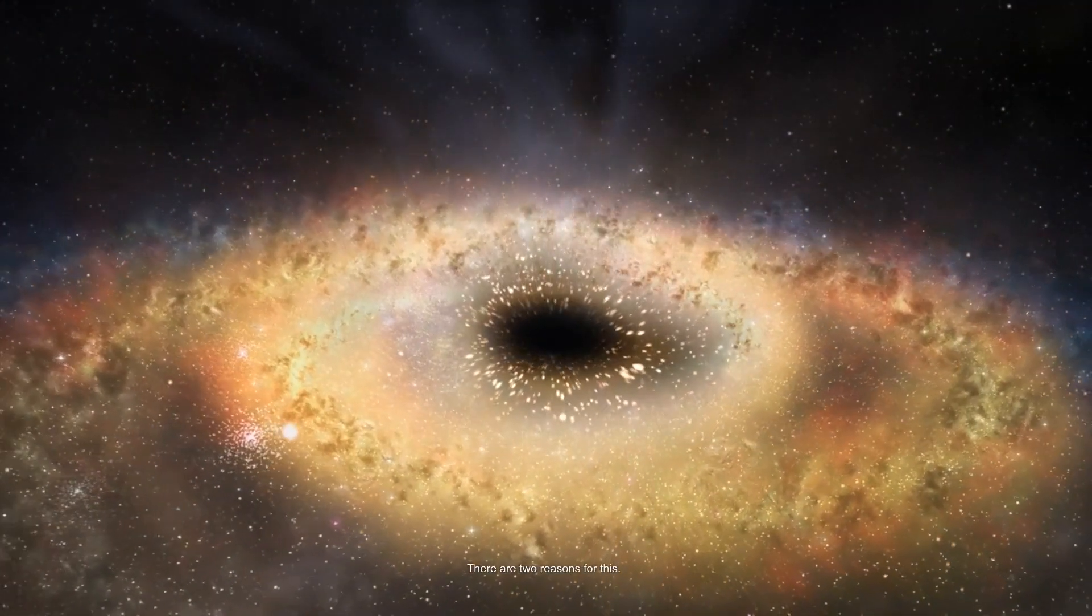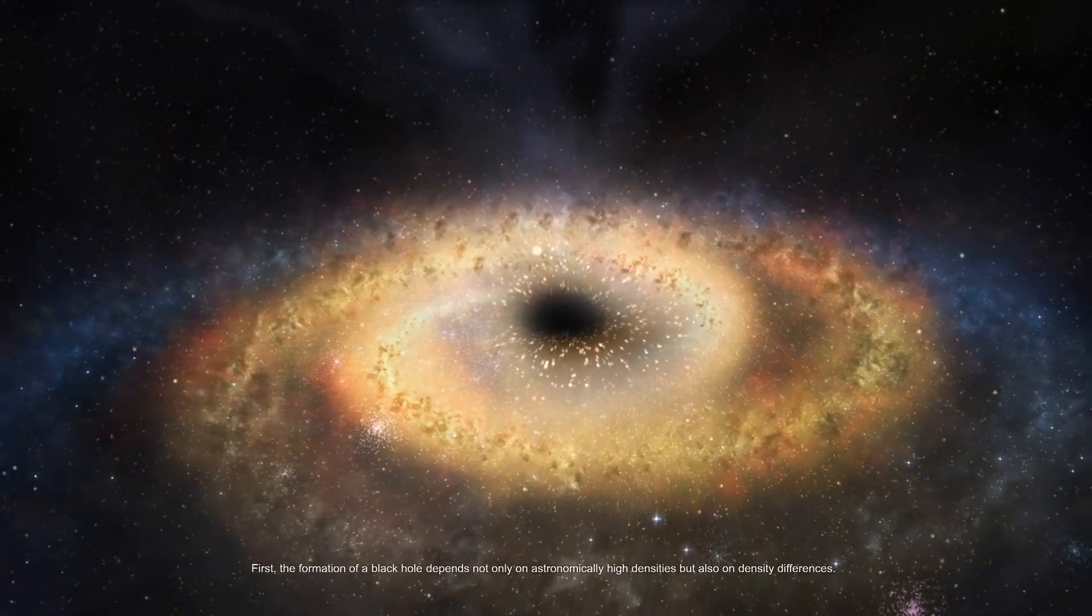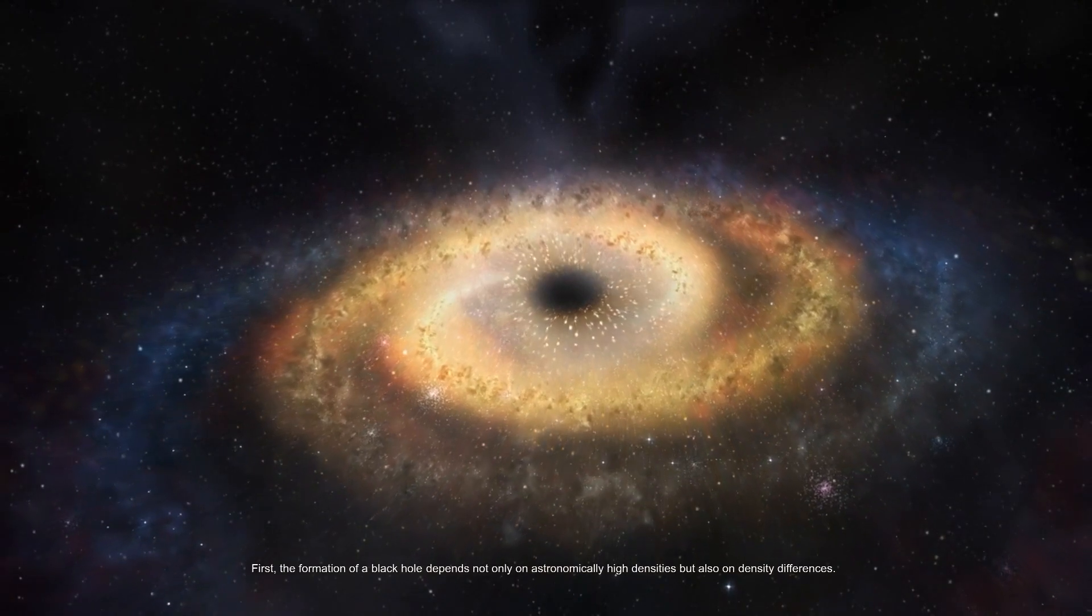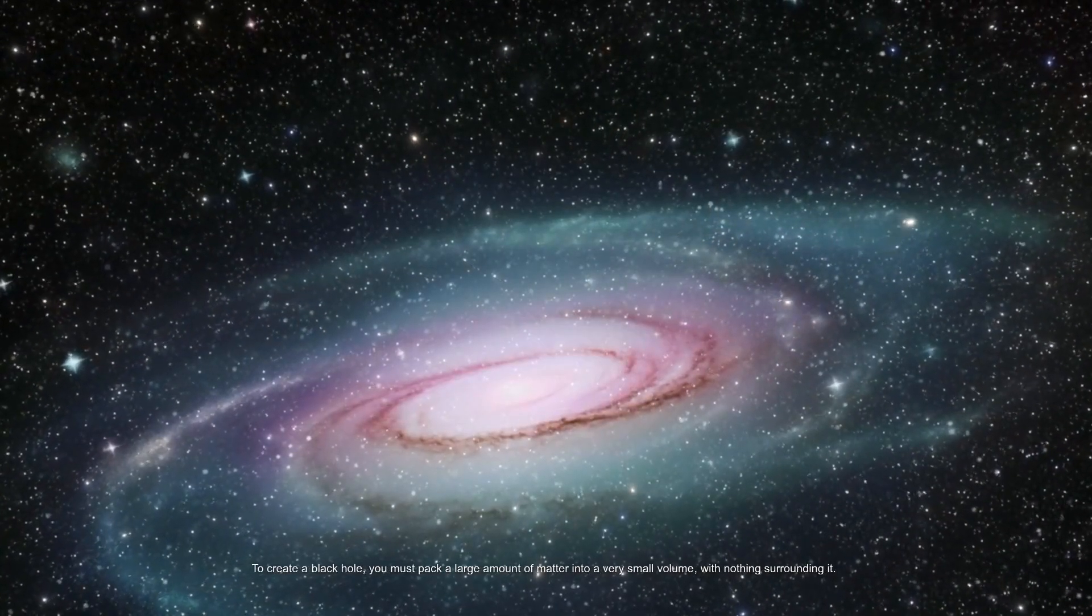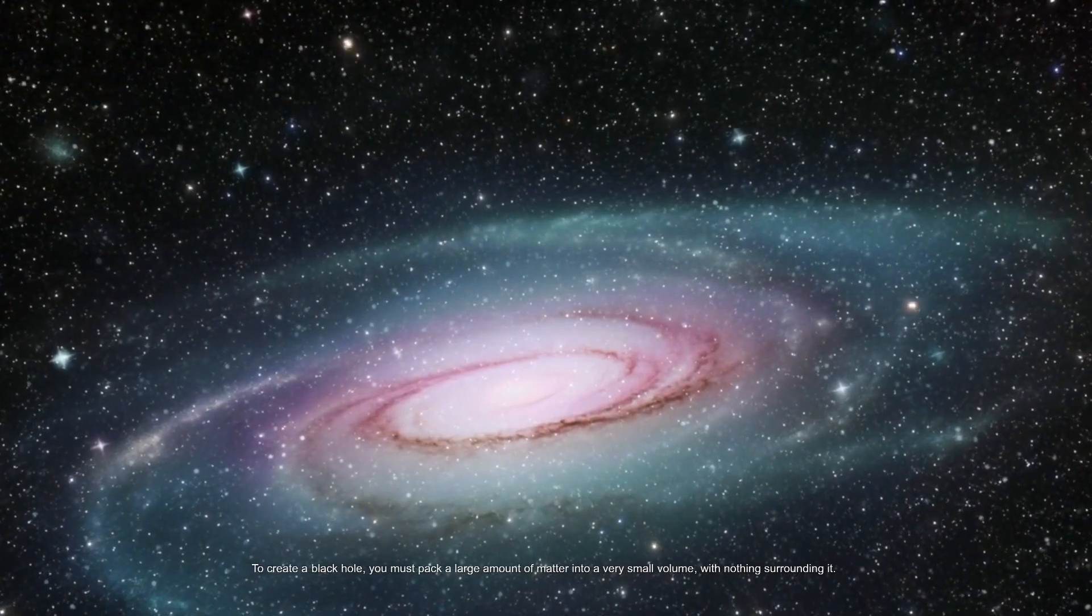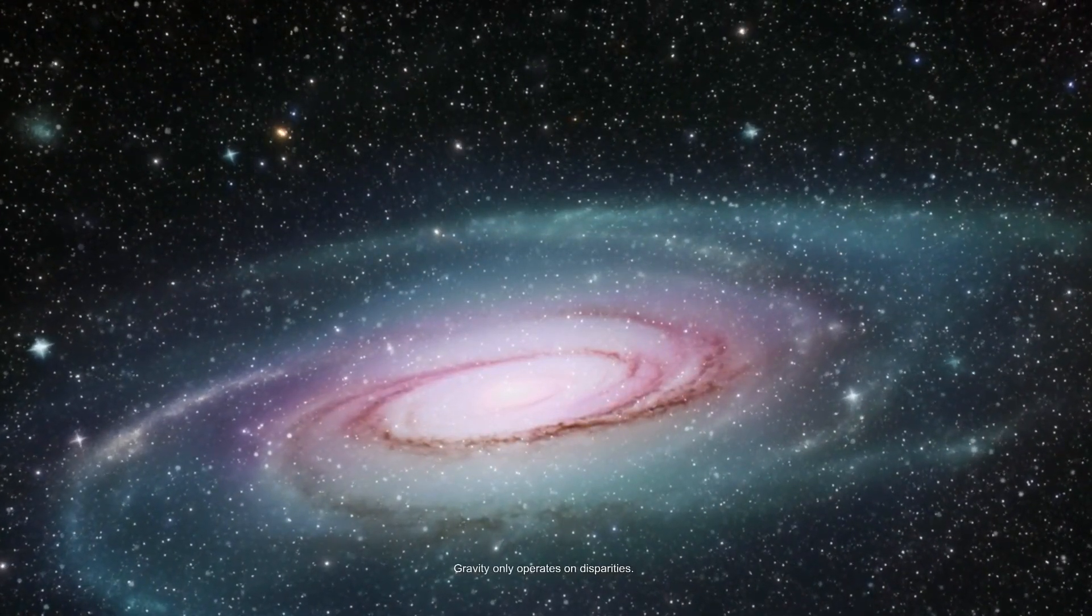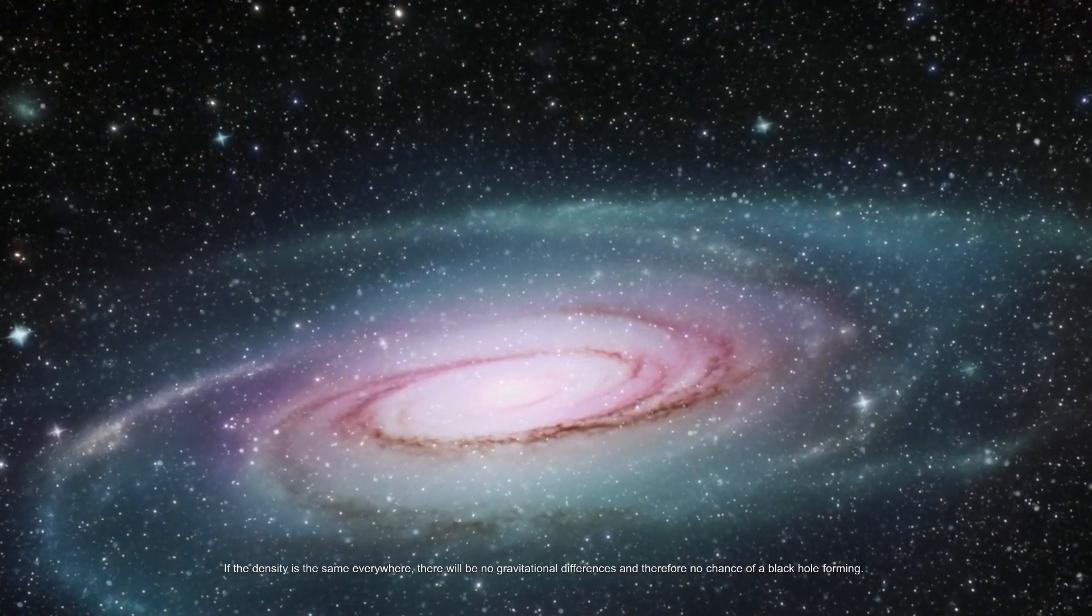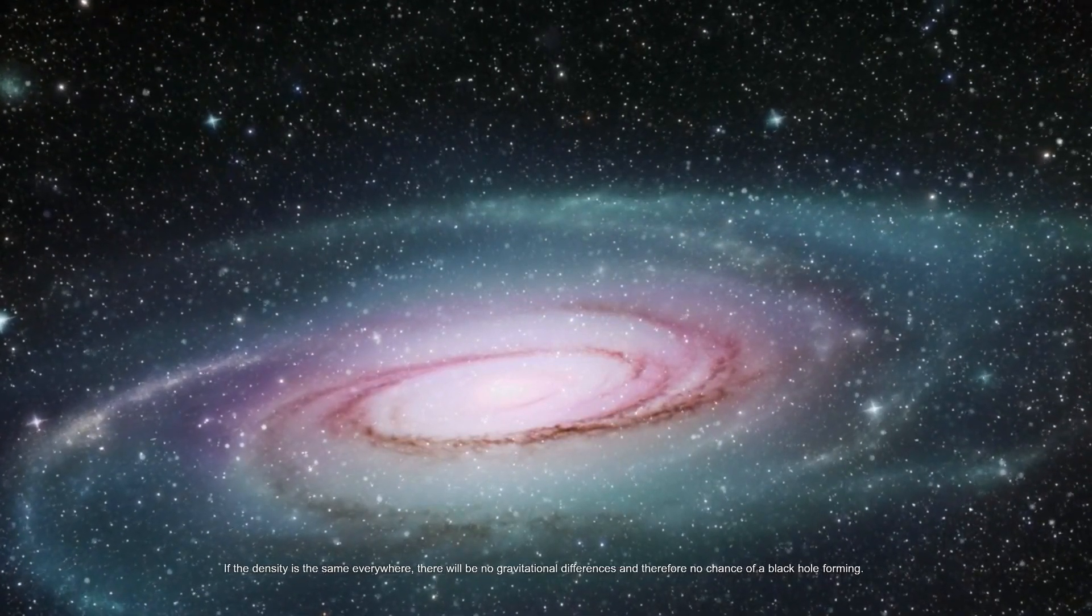There are two reasons for this. First, the formation of a black hole depends not only on astronomically high densities but also on density differences. To create a black hole, you must pack a large amount of matter into a very small volume with nothing surrounding it. Gravity only operates on disparities. If the density is the same everywhere, there will be no gravitational differences and therefore no chance of a black hole forming.